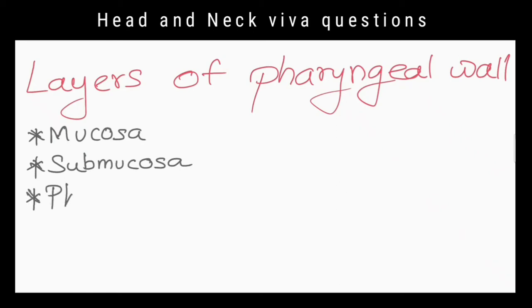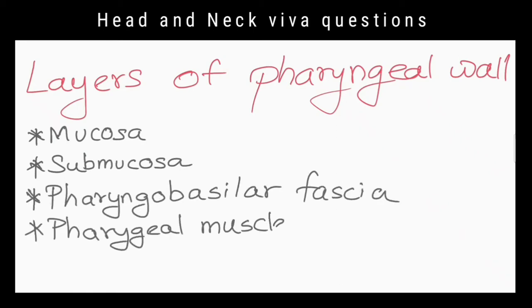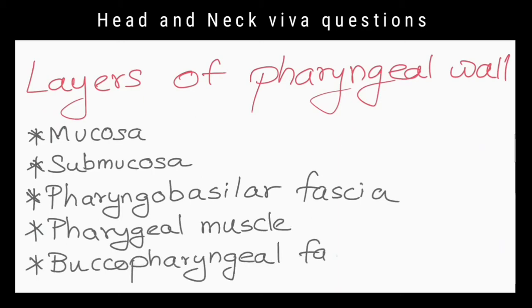What are the layers of the pharyngeal wall? Mucosa, submucosa, pharyngobasilar fascia, pharyngeal muscles, and buccopharyngeal fascia.